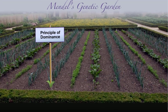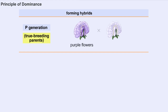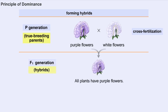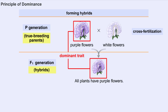Mendel selected true-breeding parents with contrasting traits, for example, purple and white flower color, and performed reciprocal crosses by choosing pollen from one parent and hand-pollinating the seed-forming parent. A cross-fertilization resulted from this procedure. In the formation of the F1 generation, Mendel noticed that the white flower trait disappeared, while the contrasting purple flower trait dominated in 100% of the F1 offspring. He used the terms dominant for the trait transmitted unchanged to the F1 hybrids, and recessive for the parental trait which had become latent in the F1 progeny. This principle is now stated as Mendel's Principle of Dominance.